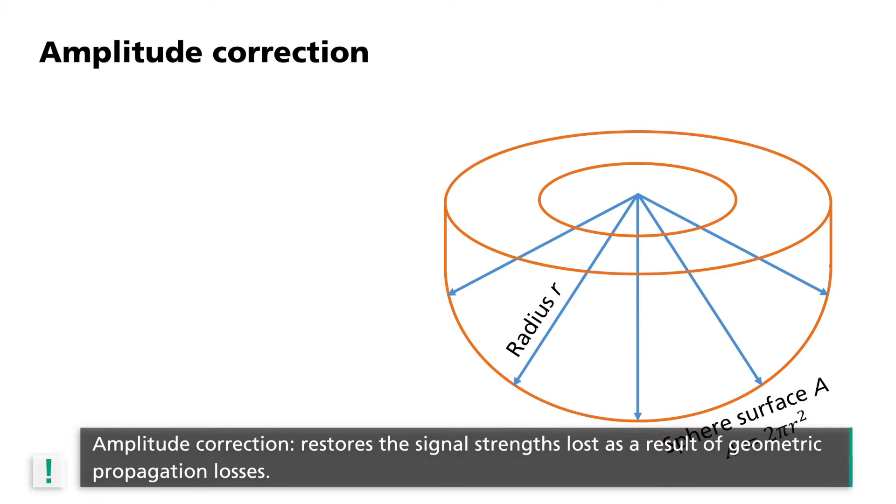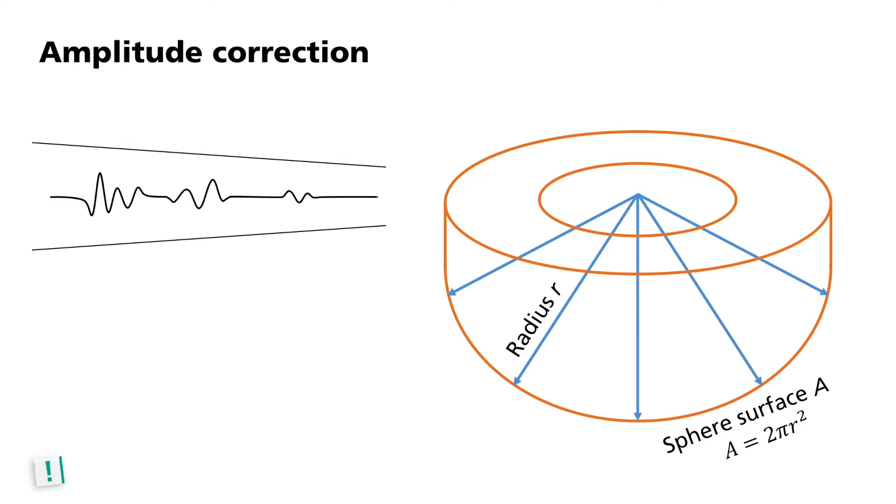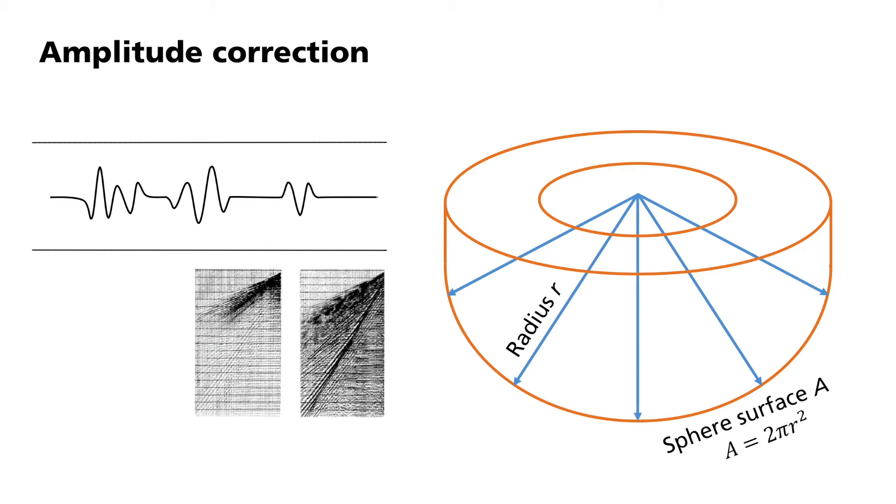Amplitude correction restores the signal strength, lost as a result of geometric propagation losses. Late arriving weak signals are thereby amplified. This is referred to as gain recovery. Since the size of the decrease in amplitude can be estimated, the reduction can be corrected. It should be noted, however, that with this type of simple correction, interfering noise signals are also amplified. This can be removed by more complex corrections or in later steps of processing such as deconvolution.